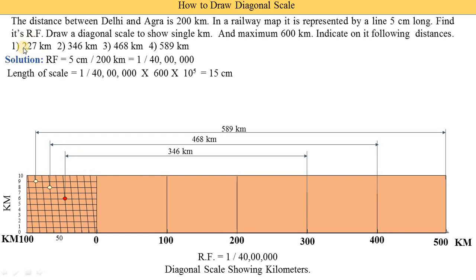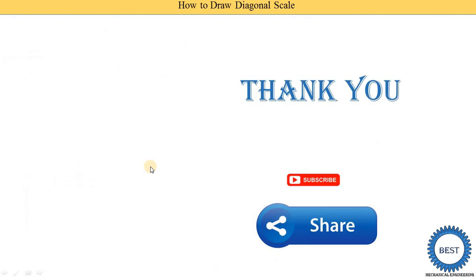Finally, we indicate 227 kilometers. We locate 200 kilometers and draw a vertical line from that point. The remaining 27 kilometers — we find 20 on the horizontal scale, then move upward 7 divisions on the vertical scale to get the point. This indicates 27 kilometers, and combined with 200, the total is 227 kilometers.